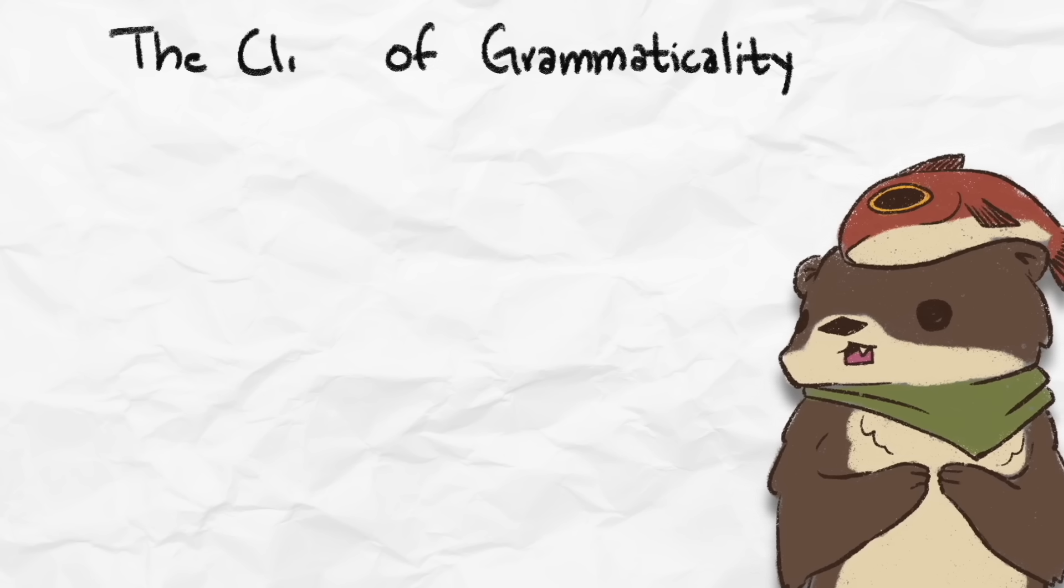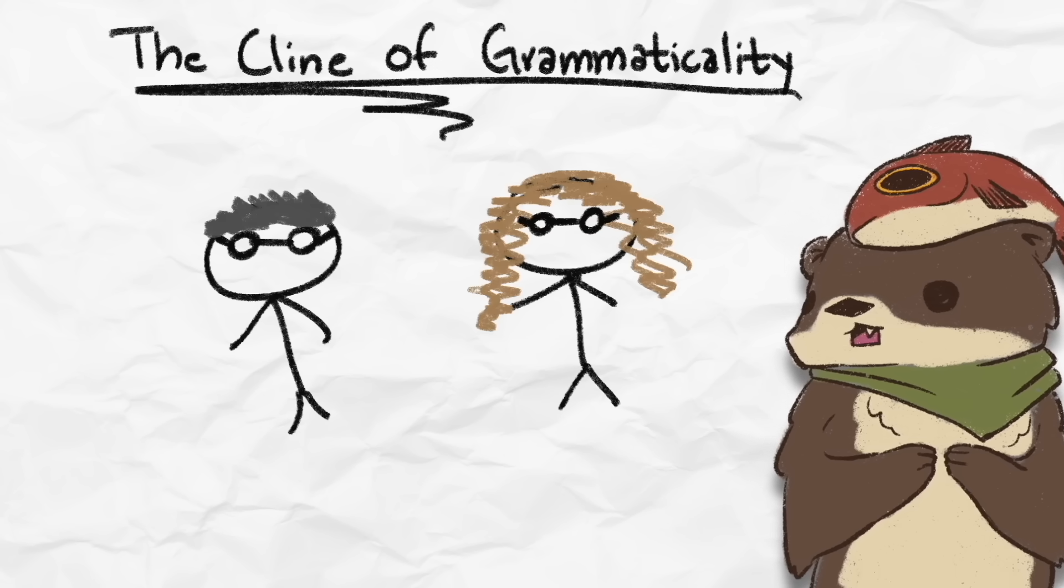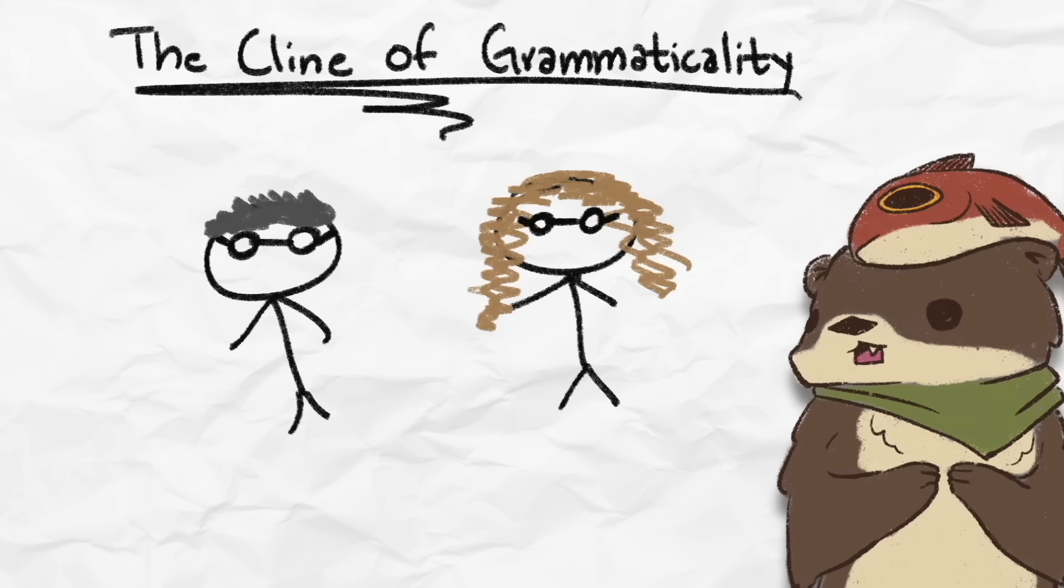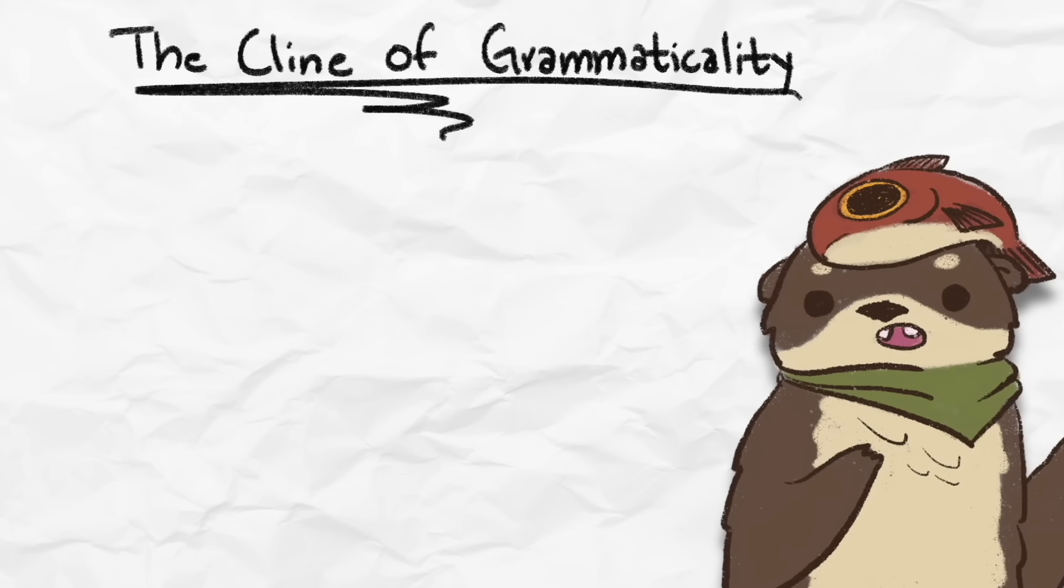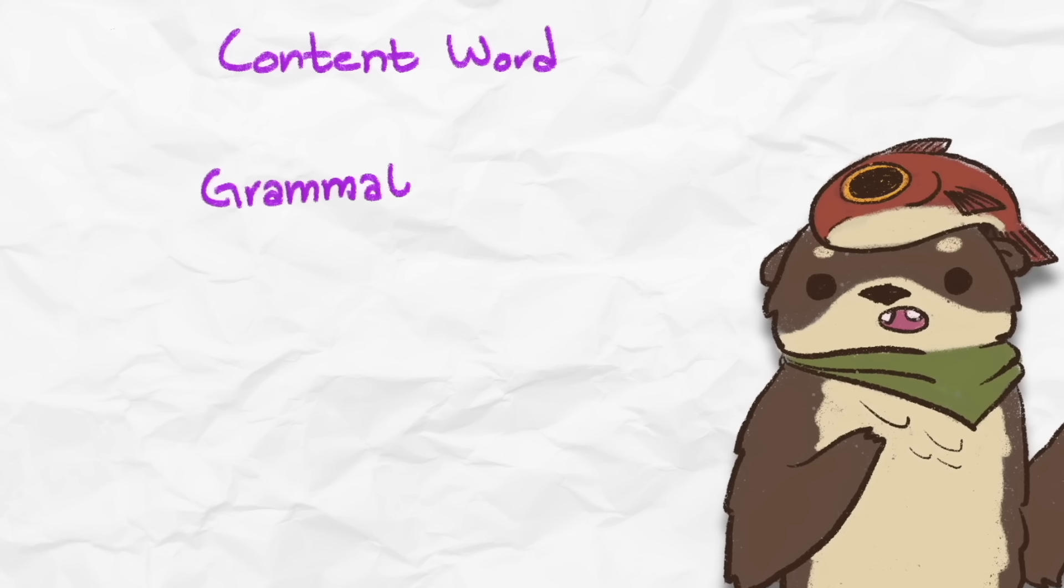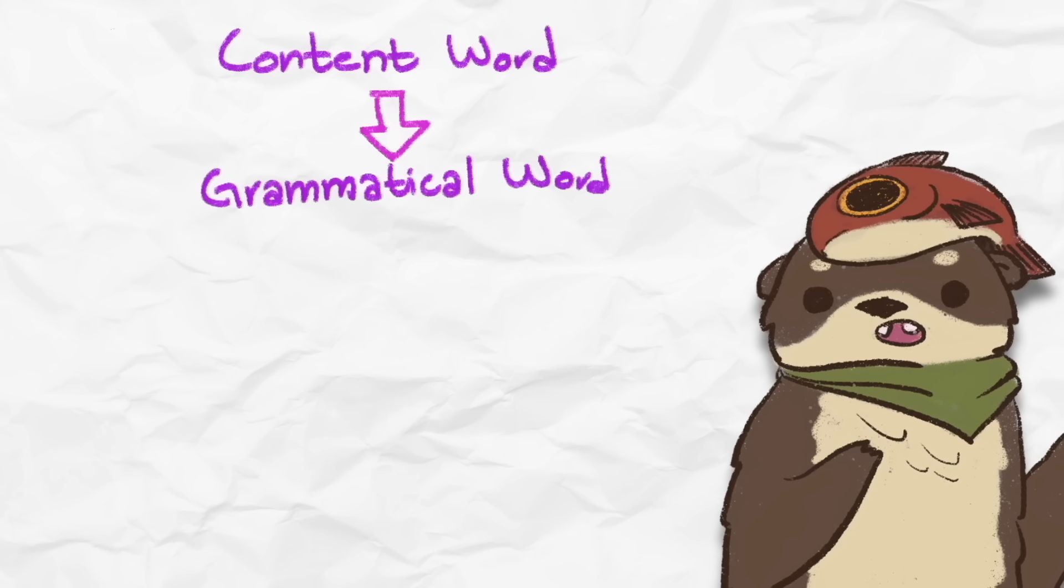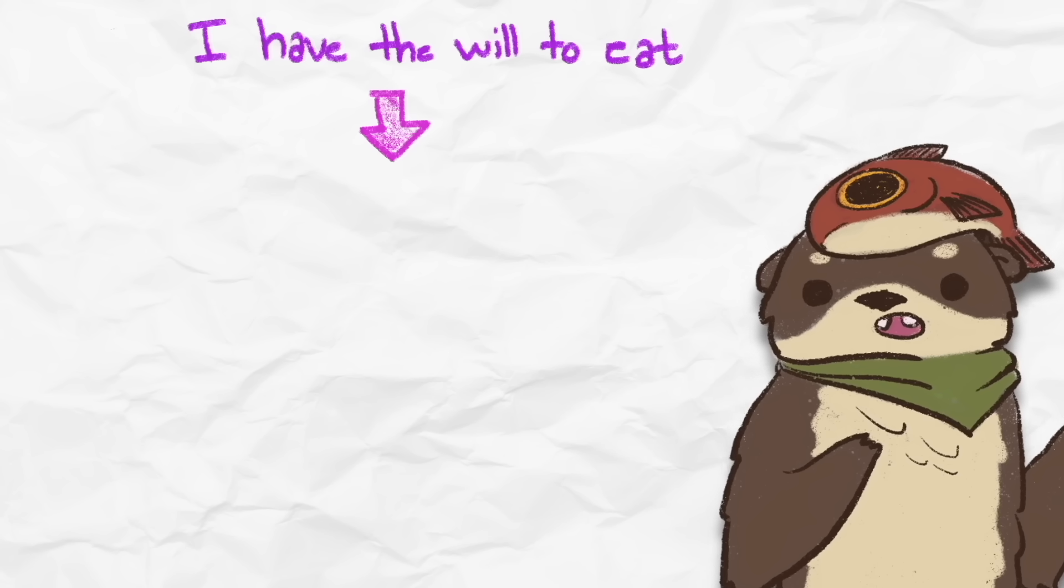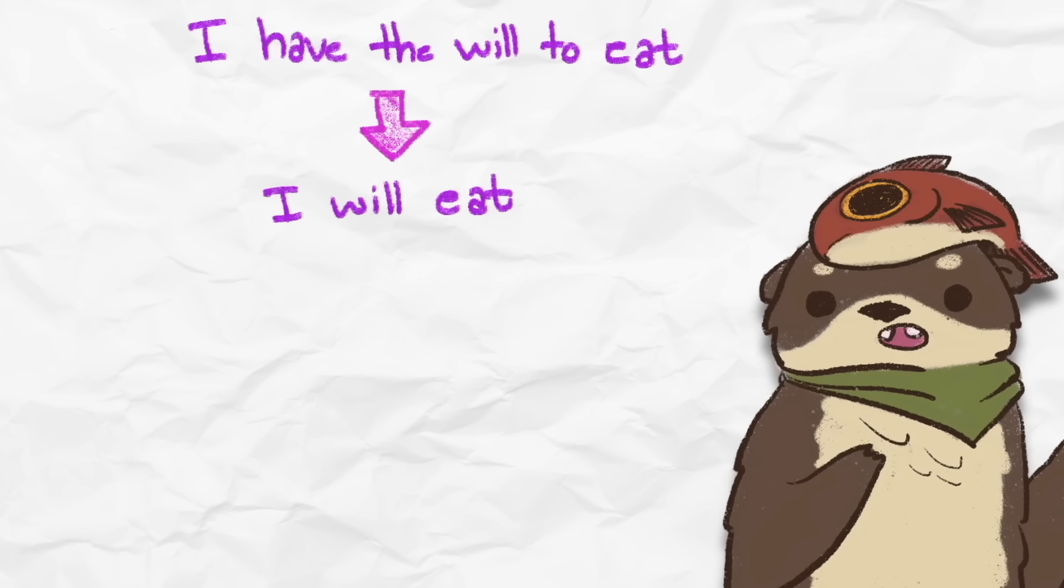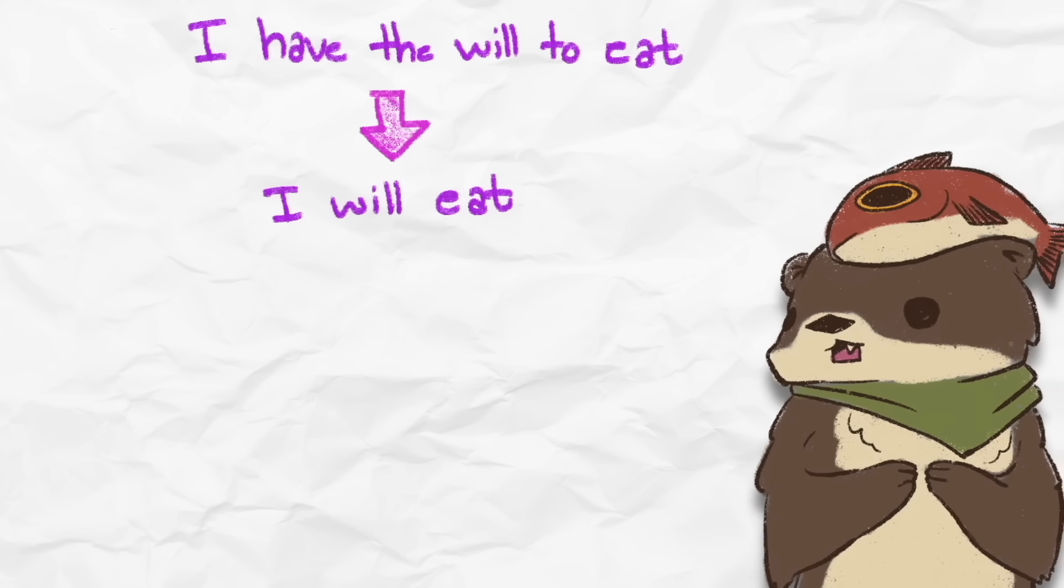There's this theory called the decline of grammaticality, created by the linguists Hopper and Traugott, who attempt to figure out the evolution of how languages adopt new grammatical suffixes. It goes like this. Something first starts out as a content word, then becomes a grammatical word. We have seen this with the words gonna and will, where will used to be used as an entire phrase, like, I have the will to eat, but slowly became just will, which is a grammatical word now.